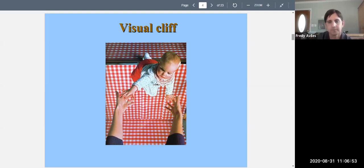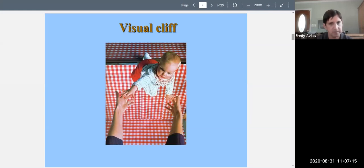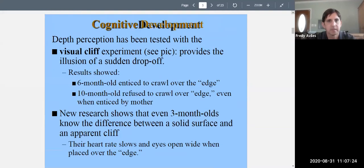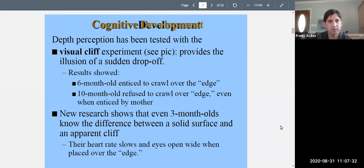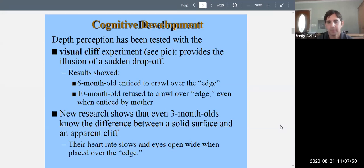The logic of the visual cliff experiment is: if the child can be enticed to crawl over the apparent edge toward the mother, it means the child cannot yet see depth. If the child refuses to crawl over the edge no matter how much the mother urges, that means the child does perceive the depth and is afraid. Results showed that six-month-olds can be enticed to crawl over the edge, suggesting they may lack depth perception, while ten-month-olds refuse.